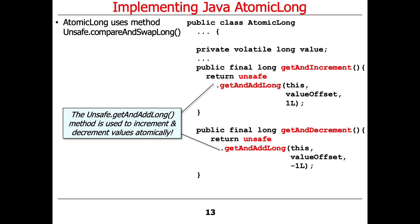Once you have getAndAddLong, you can do all kinds of other things with it. Two important methods of AtomicLong and AtomicInteger are getAndIncrement and getAndDecrement — these are verbose atomic equivalents of i++ and i--. Unlike ++ and --, which are not atomic, getAndIncrement and getAndDecrement are. getAndIncrement calls getAndAddLong on this object at the valueOffset with a value of 1 to atomically add one. getAndDecrement atomically adds minus one. Notice how they're built on top of these lower-level Unsafe mechanisms, while this code itself is just regular Java.